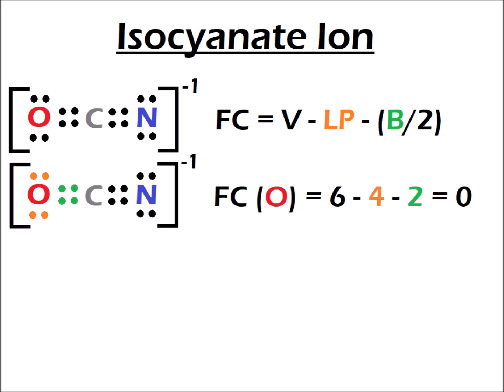First, we calculate the formal charge for the oxygen atom. Oxygen always has six valence electrons. There are four lone pair electrons, shown in orange, and the number of bonding electrons divided by 2 is equal to 2, shown in green. So that gives the formal charge for oxygen in this particular molecule a formal charge of zero.